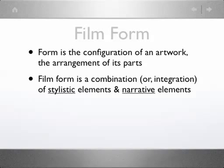Film form is a combination of stylistic elements — in other words, cinematography, mise-en-scène, sound and editing, and all of the different details of stylistic techniques related to those — combined with narrative elements, in other words things related to characters, plot, and story, and how those elements of narrative fit together. Film form is the combination or the integration of both elements of style as well as elements of narrative.